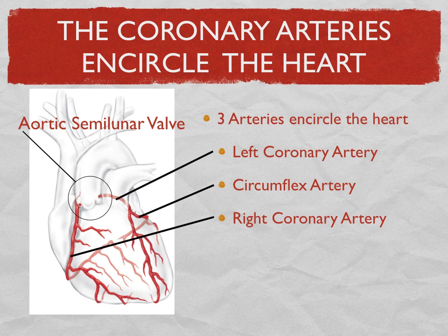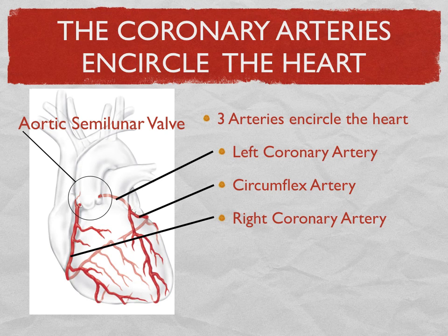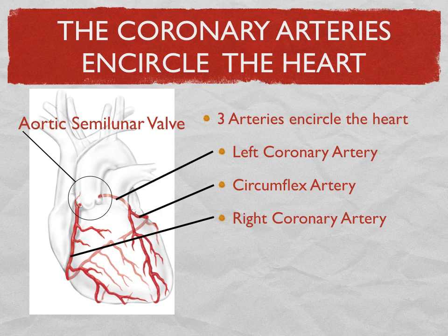Looking at the transparent heart, you can see the aortic semilunar valve, and the first two little branches right above the valve — there are two little openings. A right coronary artery comes out and encircles the right side of the heart. A left coronary artery comes out and forks, and the continuation of that is called the circumflex artery. So there are three arteries that create a corona, an encircling of the heart between the auricles and the ventricles.